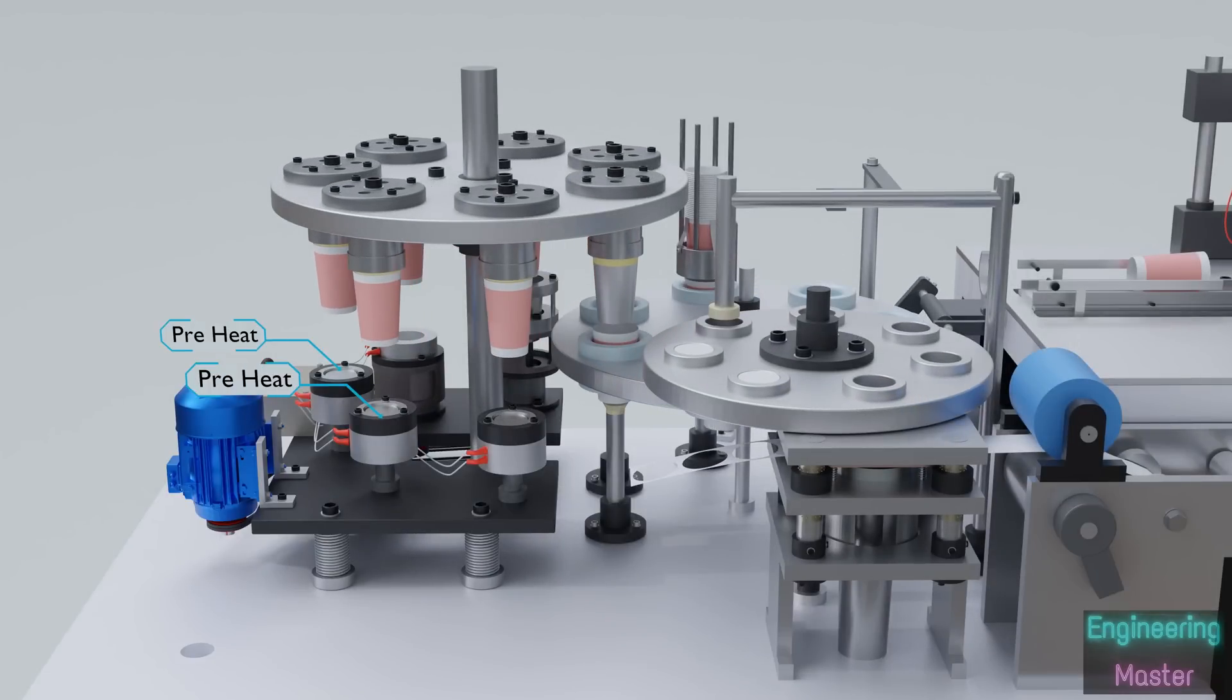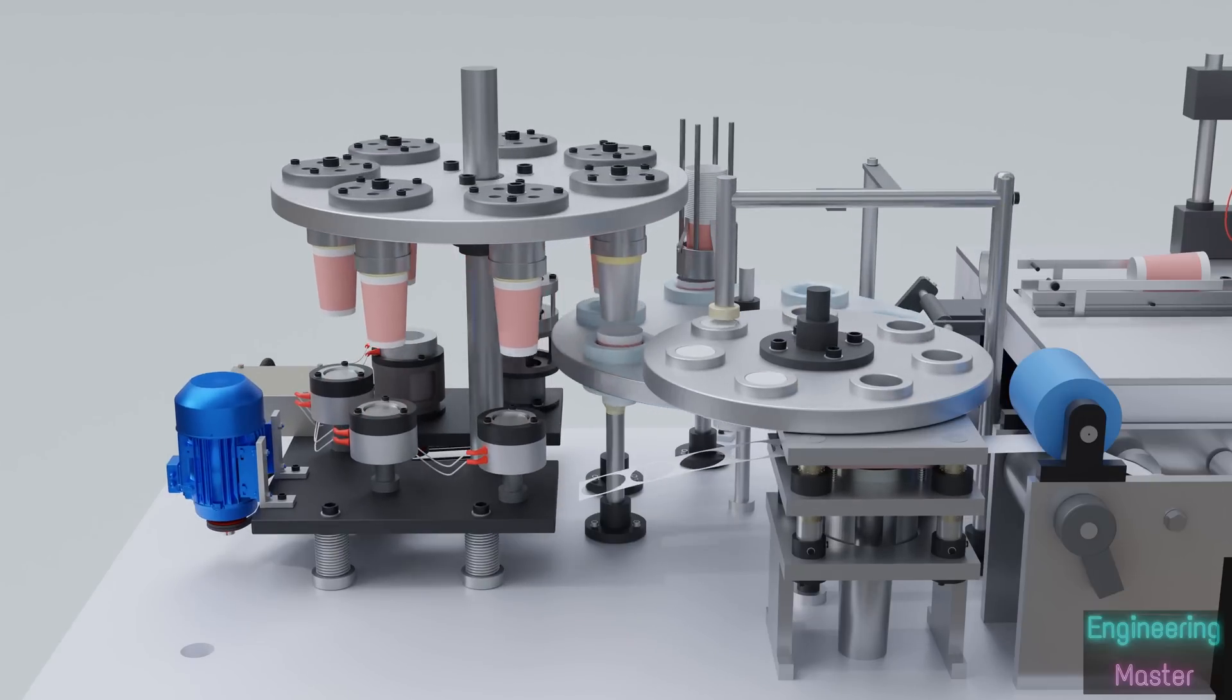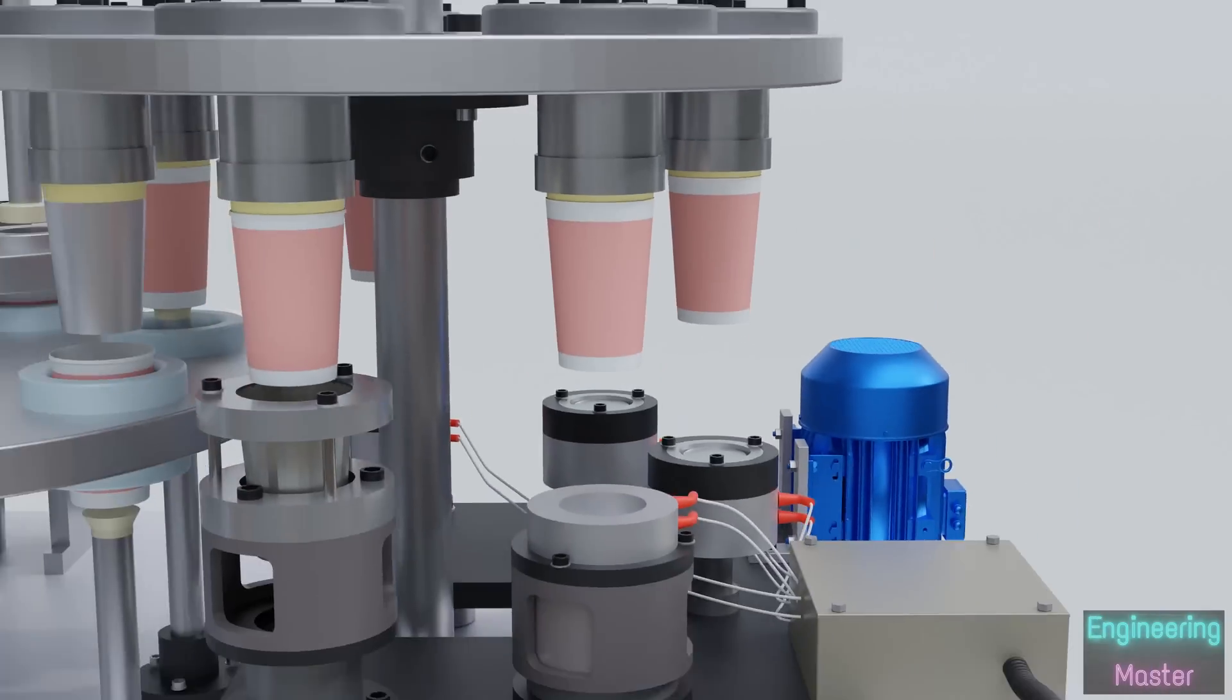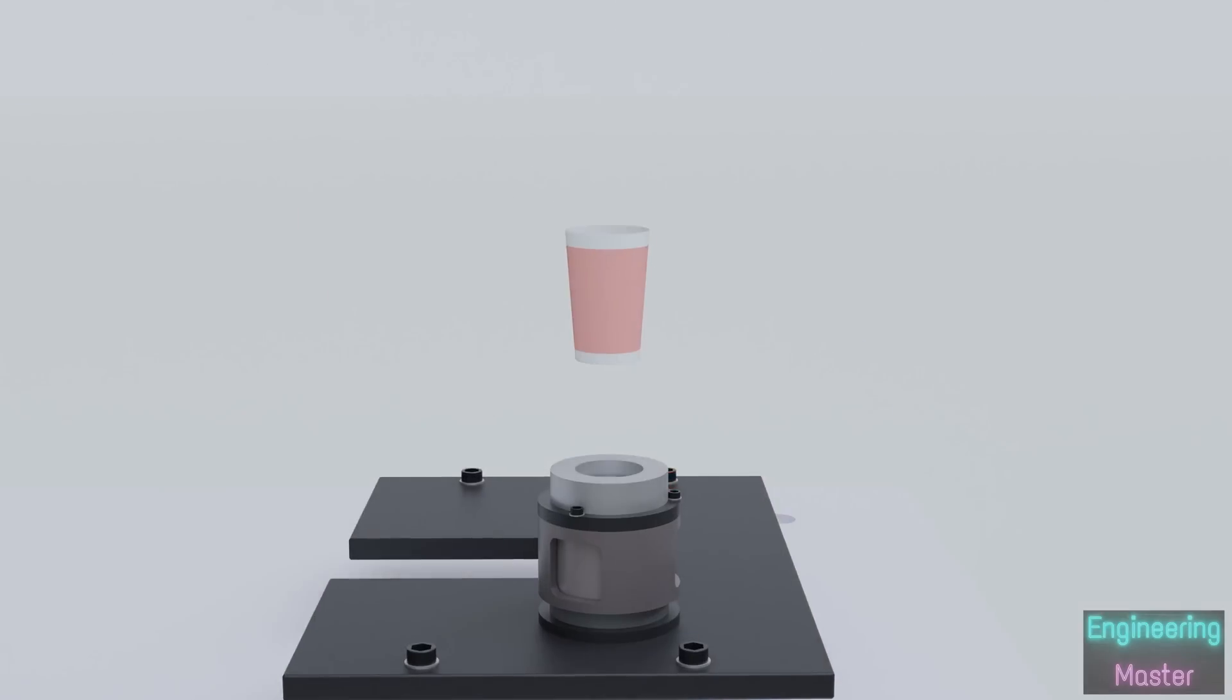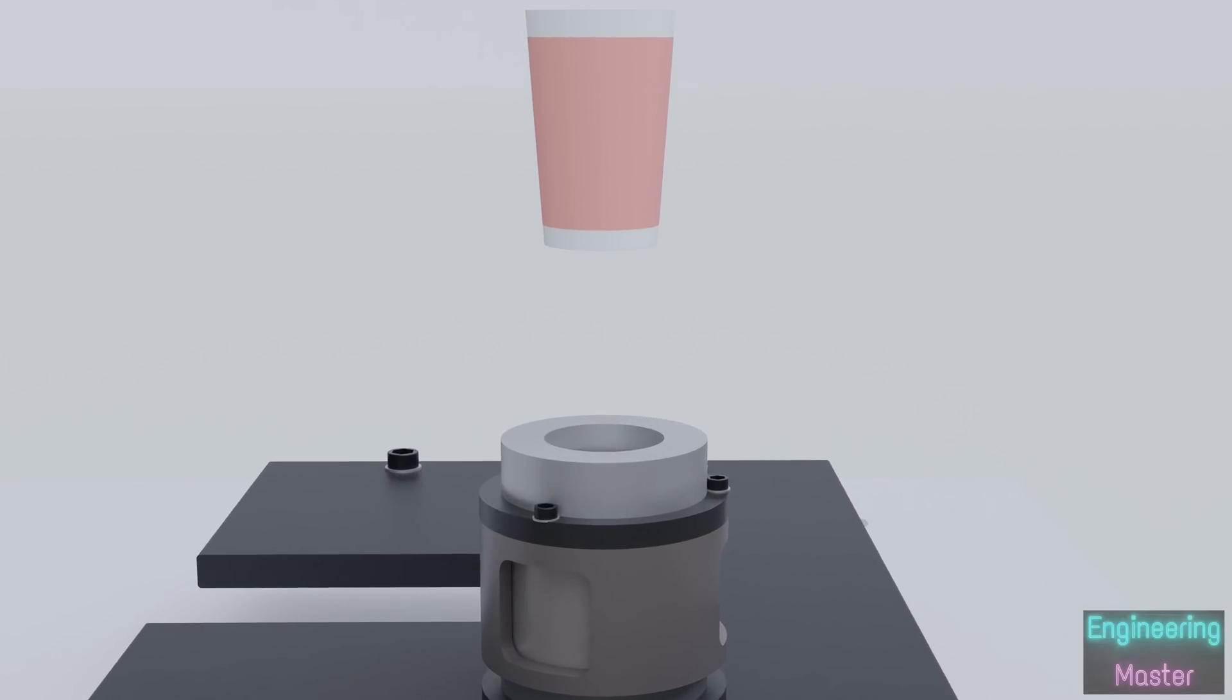The next two stages are preheating, which will enhance the forming process. Next process is knurling. Knurling is the process of creating a tightly compressed and patterned edge on the bottom of the cup.